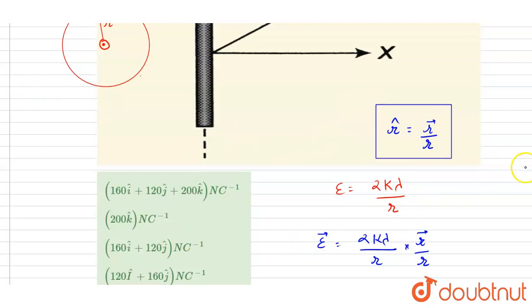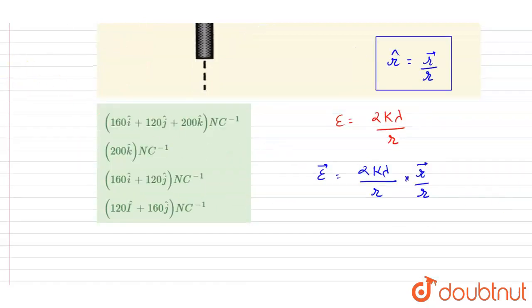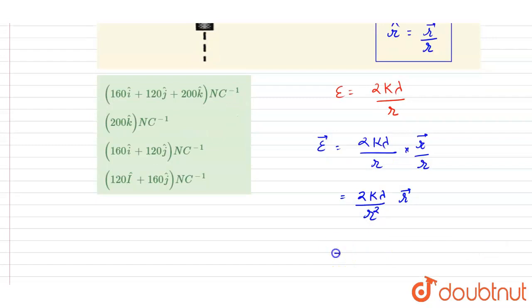Now if you see, we got this expression. I will write it down: it will be equals to 2kλ/r² times r vector.